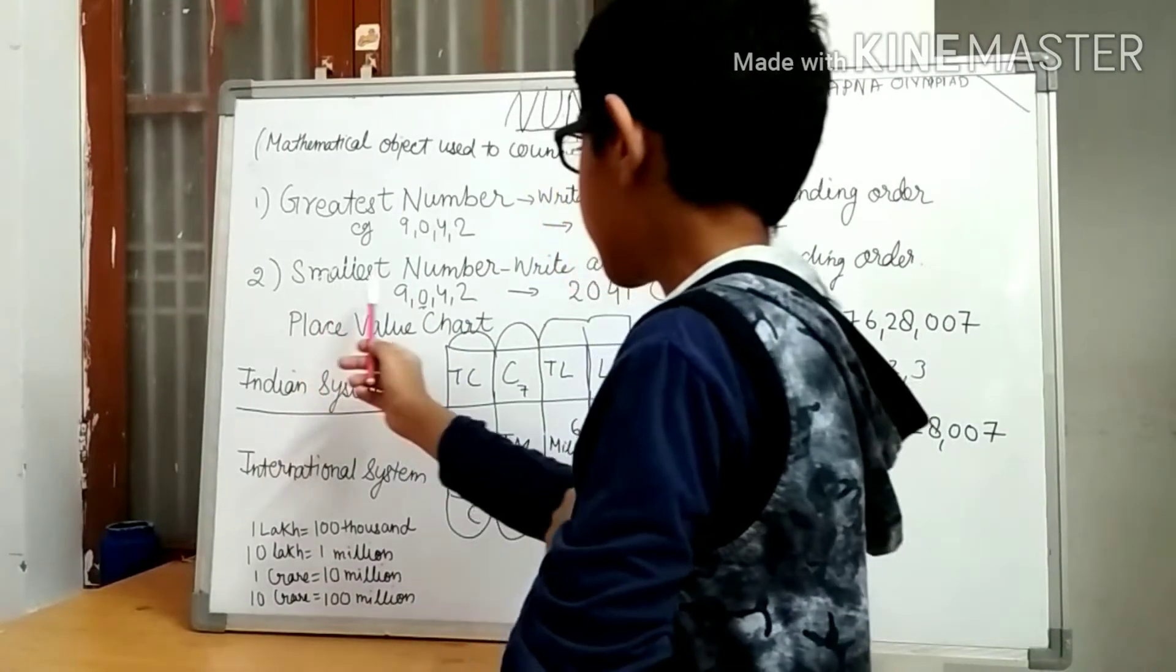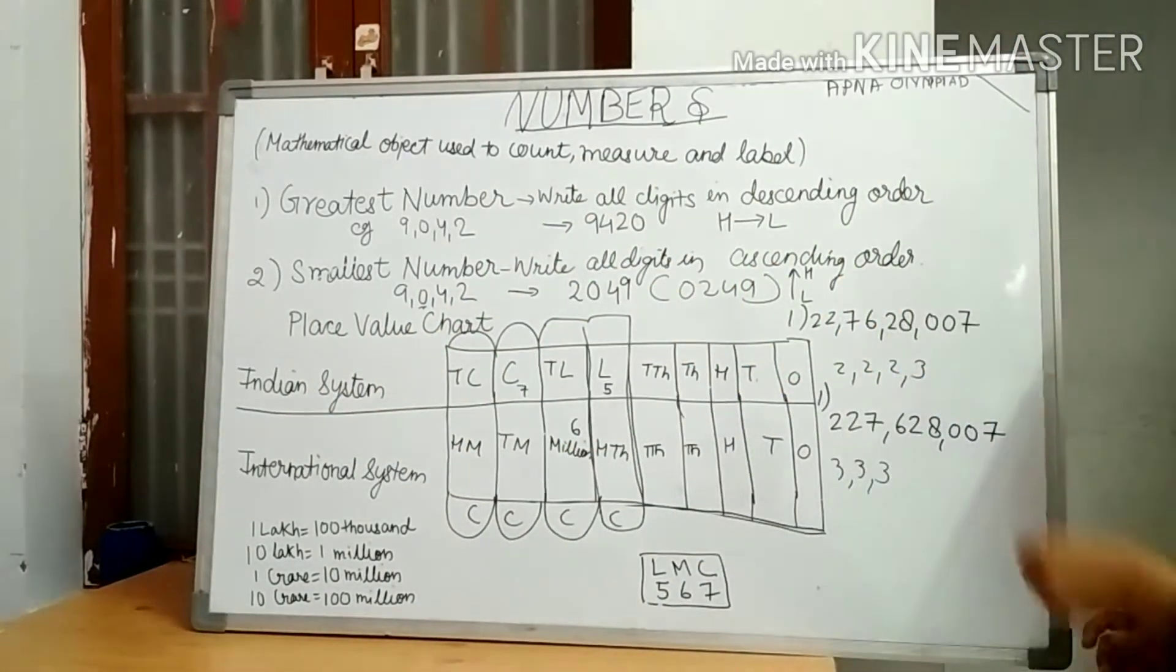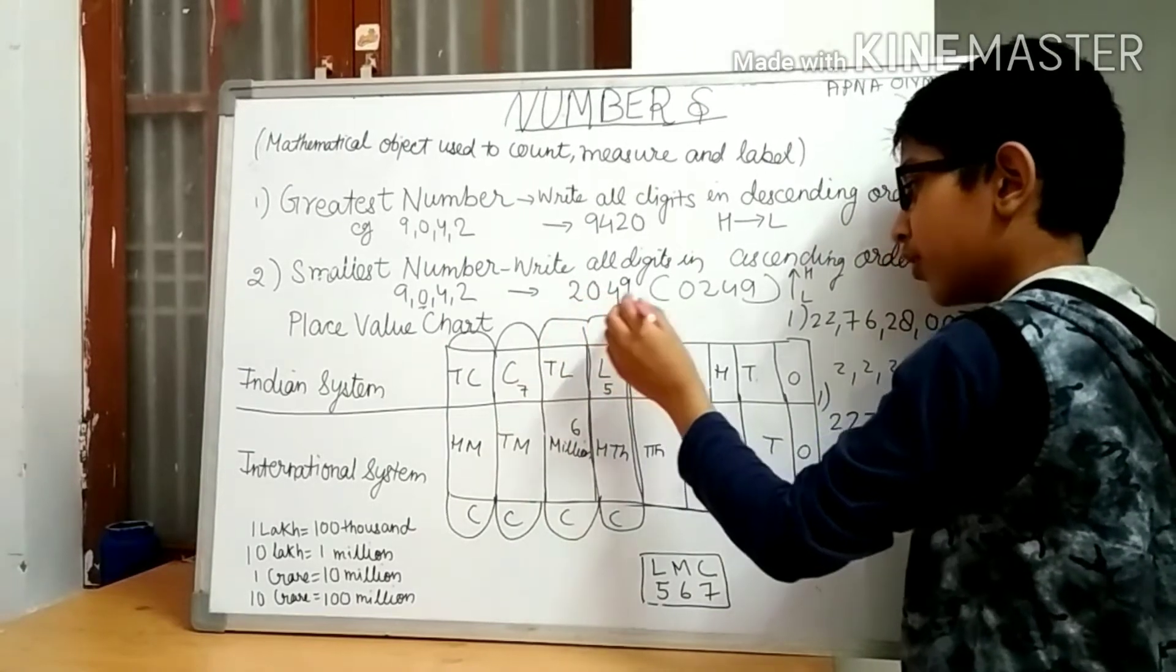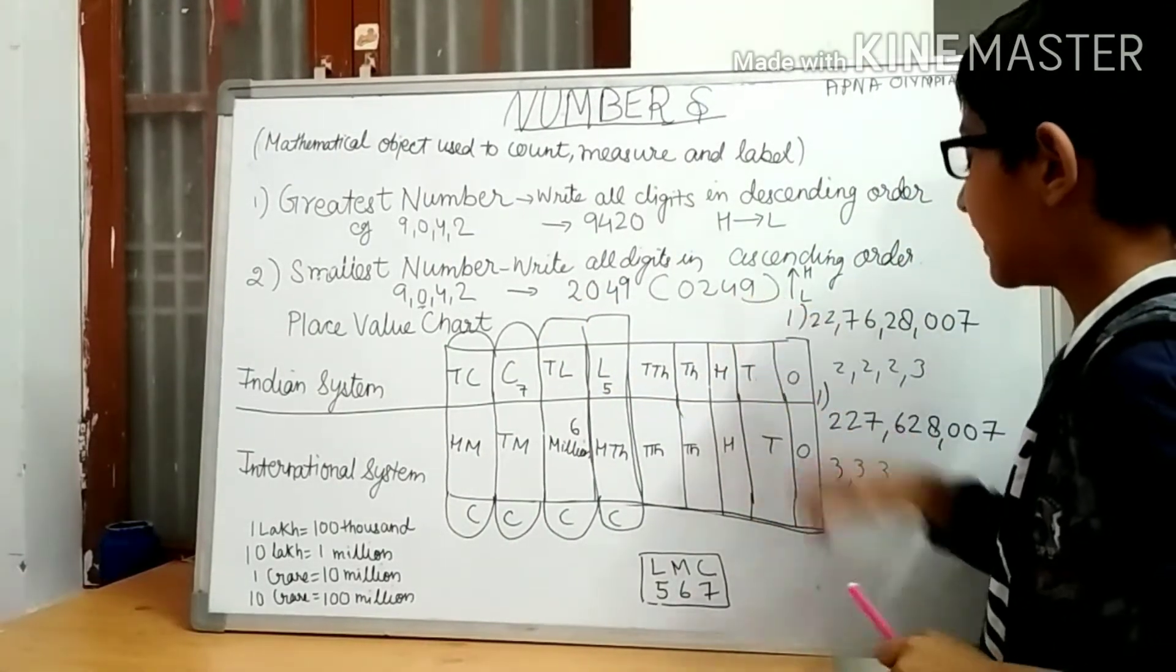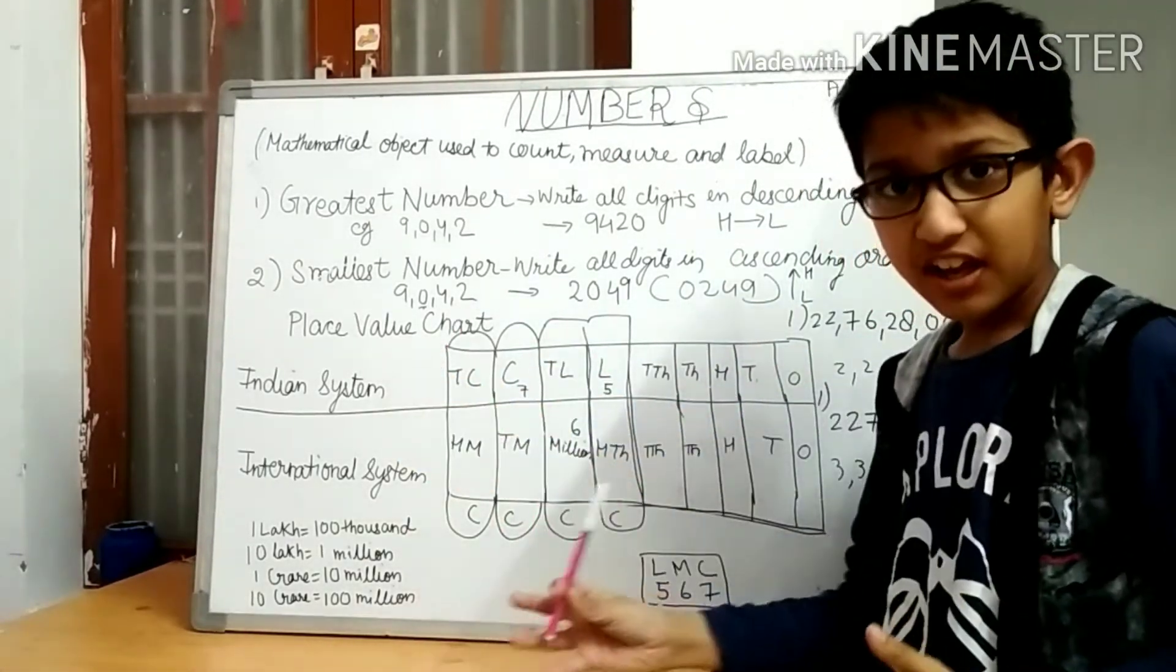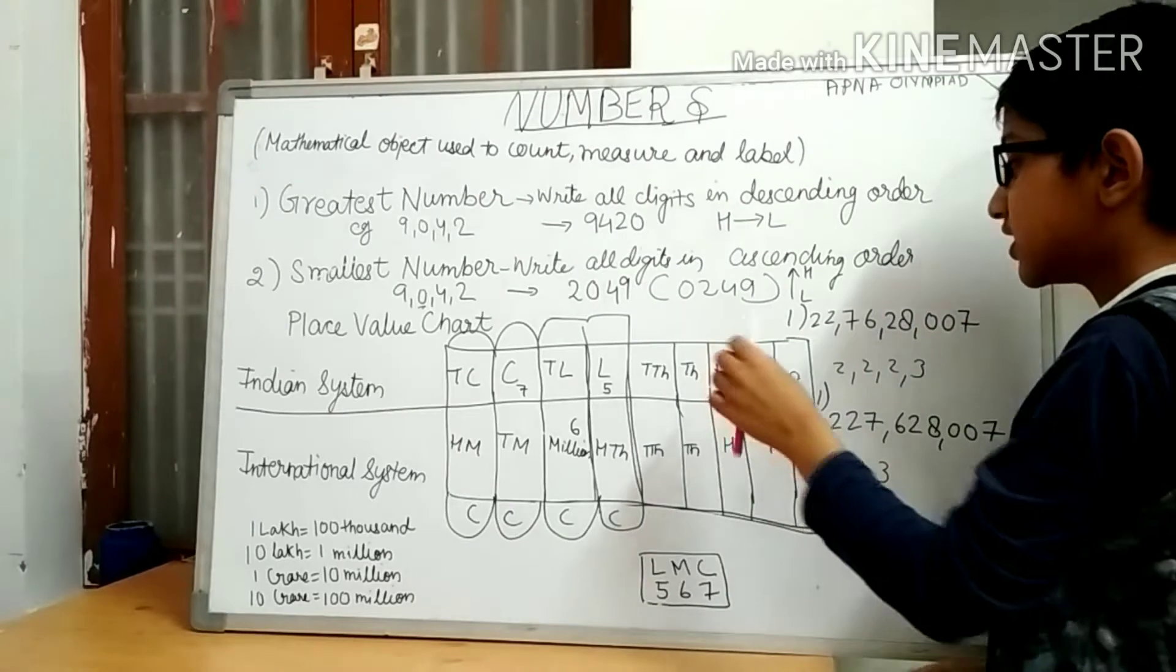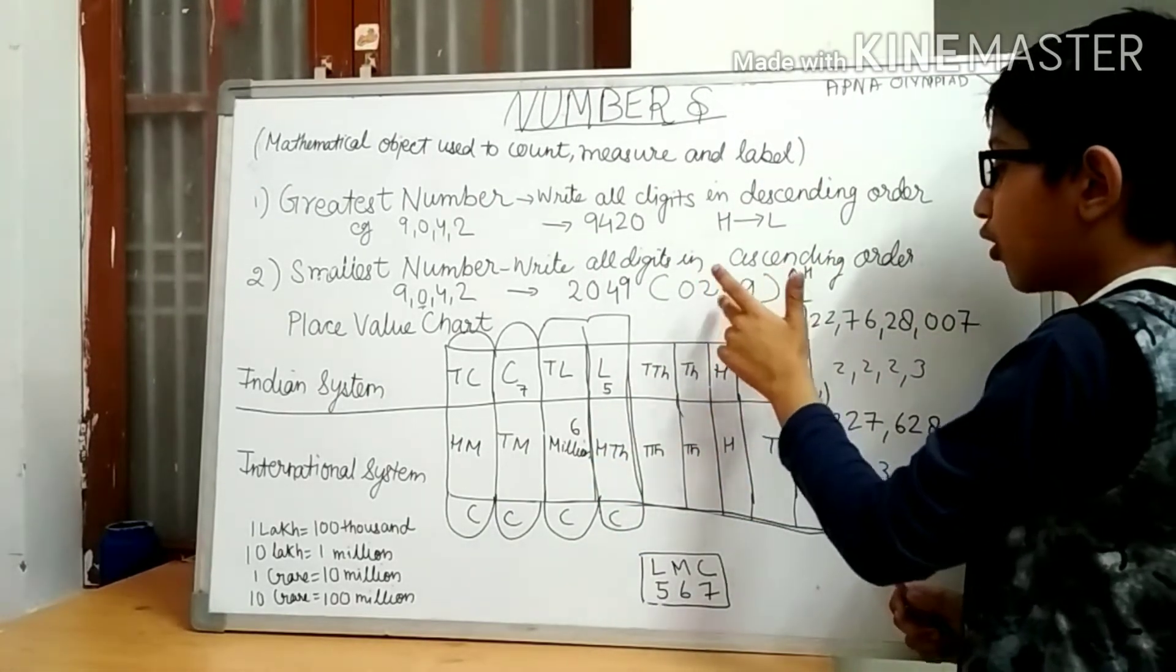Second, smallest number: write all the digits in ascending order. 9042, we have the answer is 2049. If you write 0249, then it is wrong because 0 in extreme left has no value. That's why the number will be of 3 digits like 2, 4, 9.